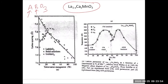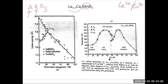If lanthanum is 3+, you get Mn³⁺; if calcium is 2+, you get Mn⁴⁺ for charge compensation. Mn³⁺ and Mn⁴⁺ have different magnetic moments but more importantly very different magnetic interactions, which is why the phase diagram has such rich behavior as a function of calcium content.